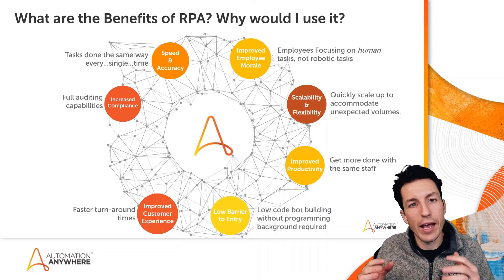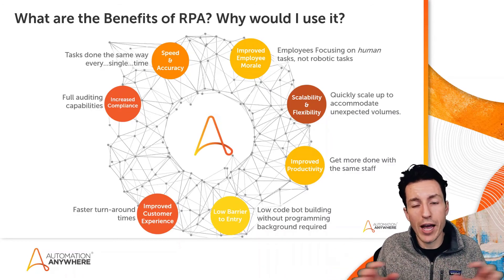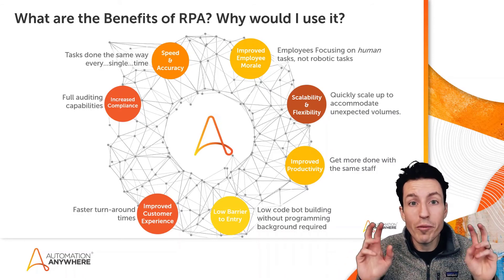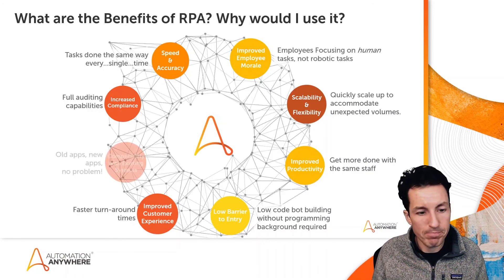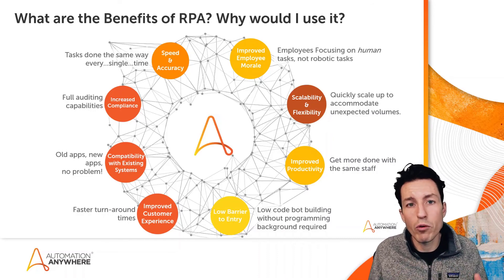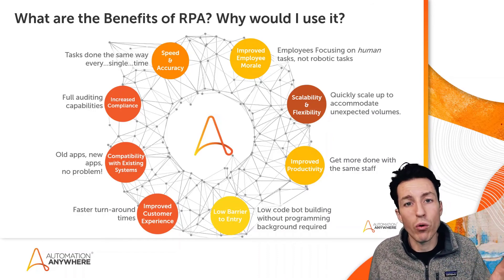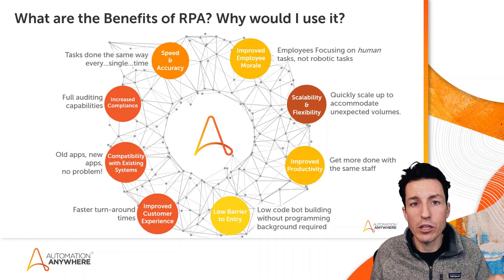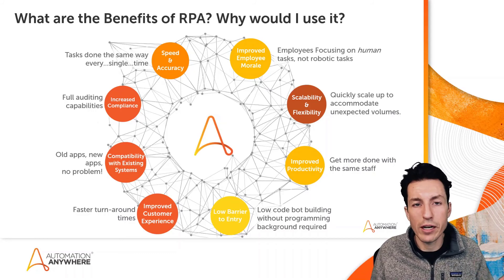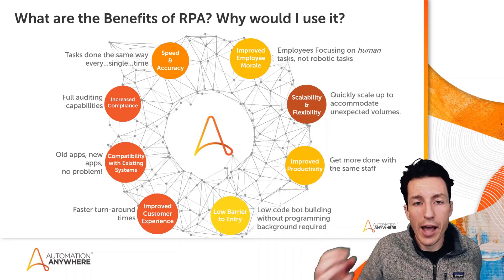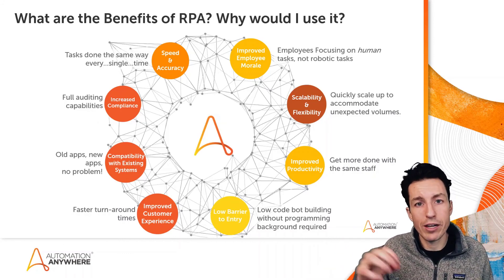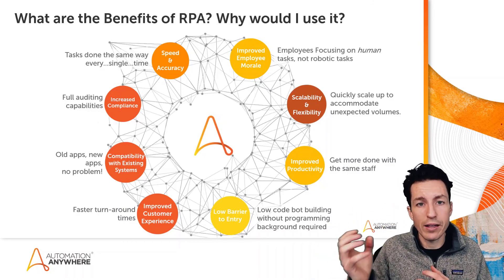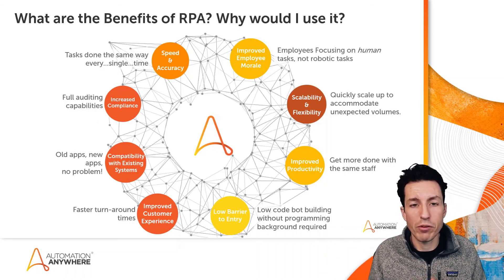Seventh, scalability and flexibility: the ability to quickly scale up to accommodate unexpected volumes — at tax time or end of quarter for financial reports, for example. A pool of bot runners can take on work whenever it comes in, essentially a digital army of workers. Finally, eighth, compatibility with existing systems — arguably the number one benefit of RPA. It can work on top of older or homegrown applications like legacy terminal apps, internal web pages, Windows thick client apps, or modern applications with a rich API, bridging all of them together.